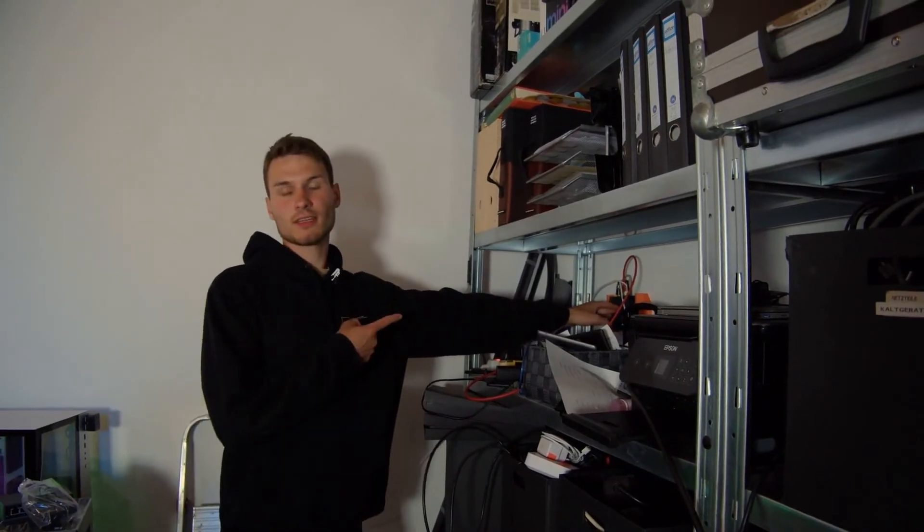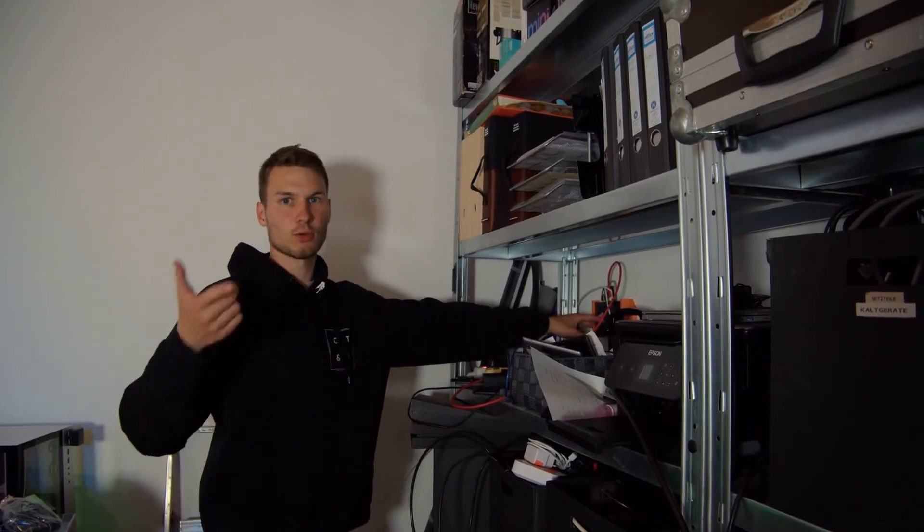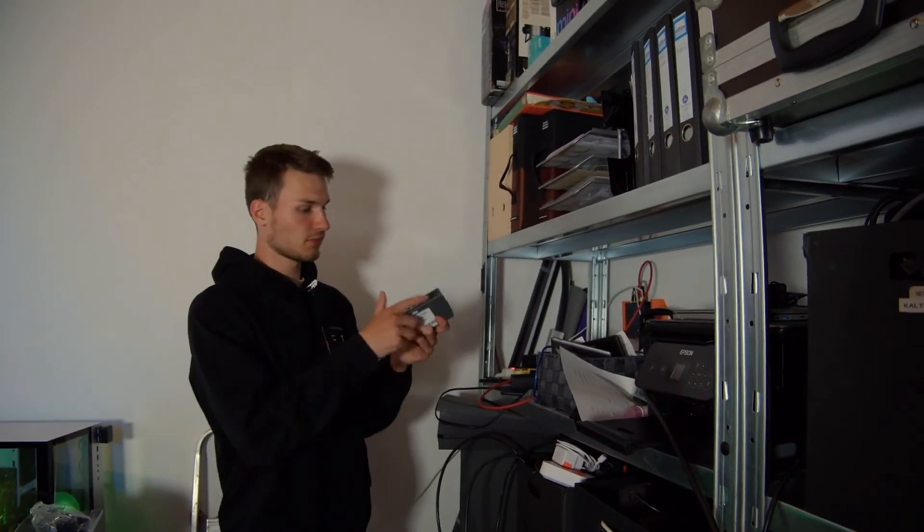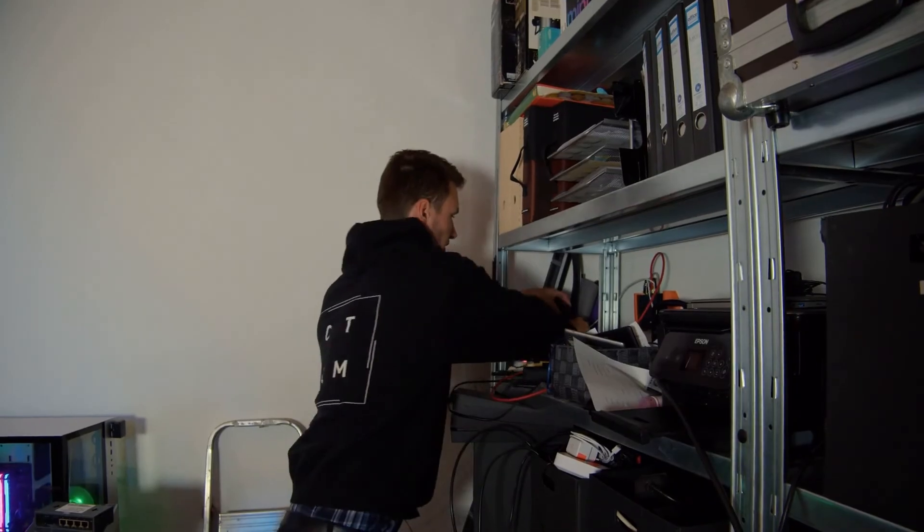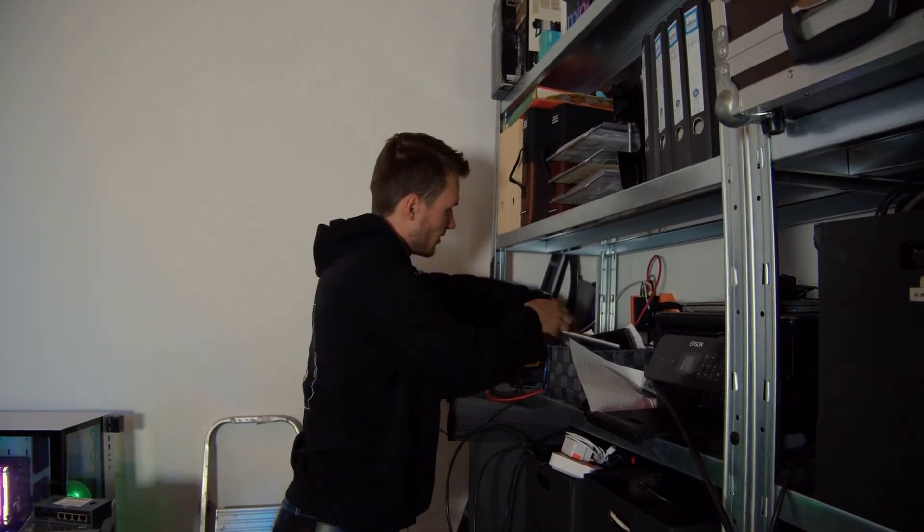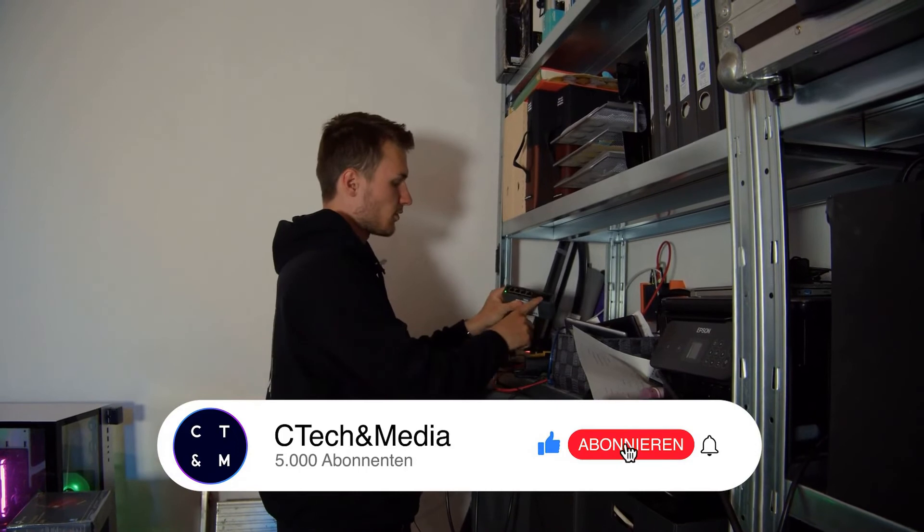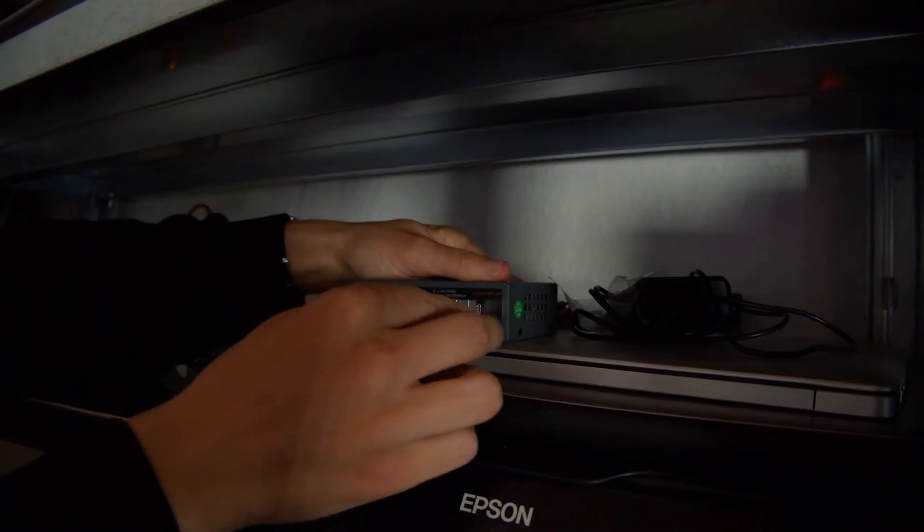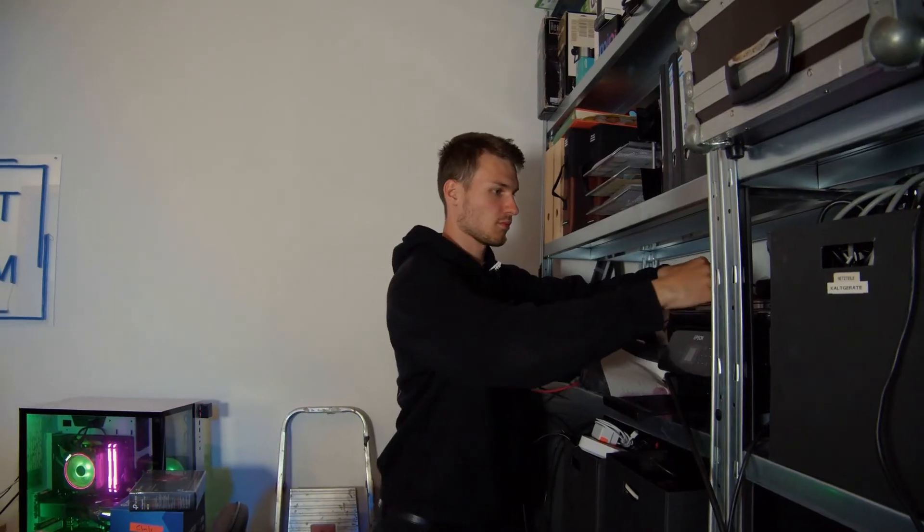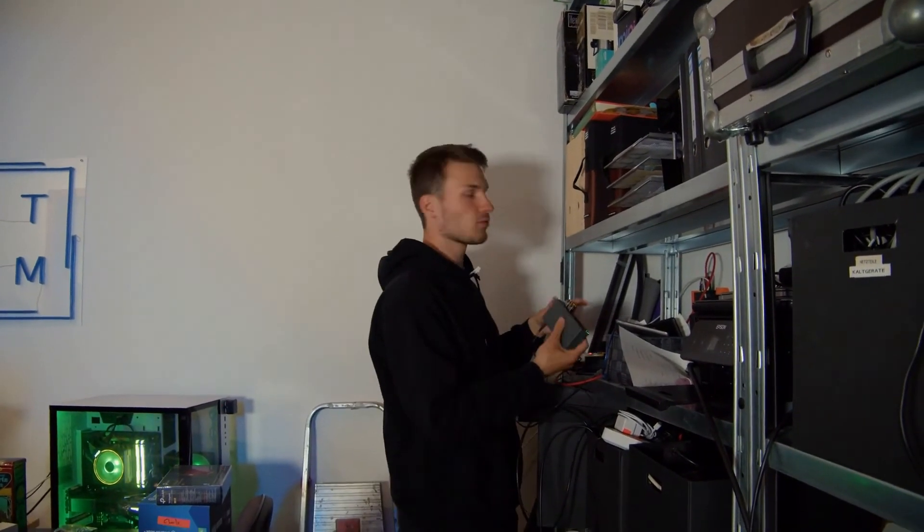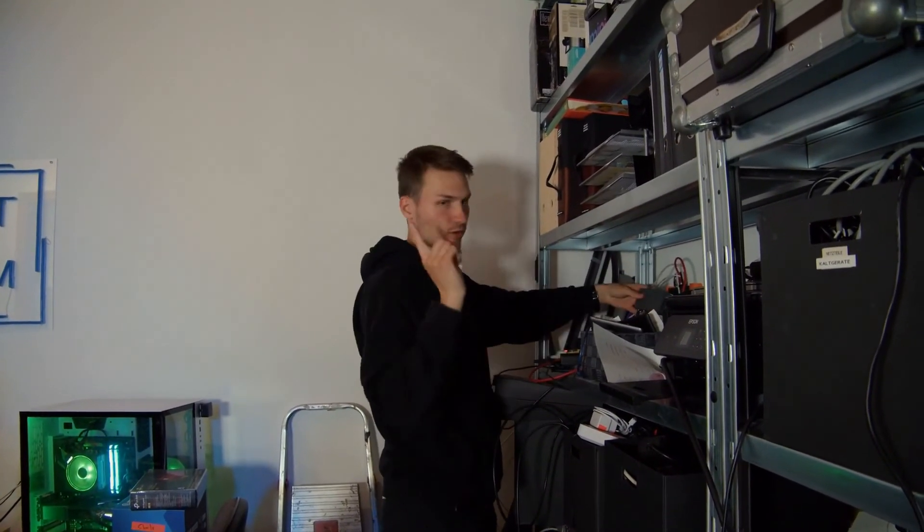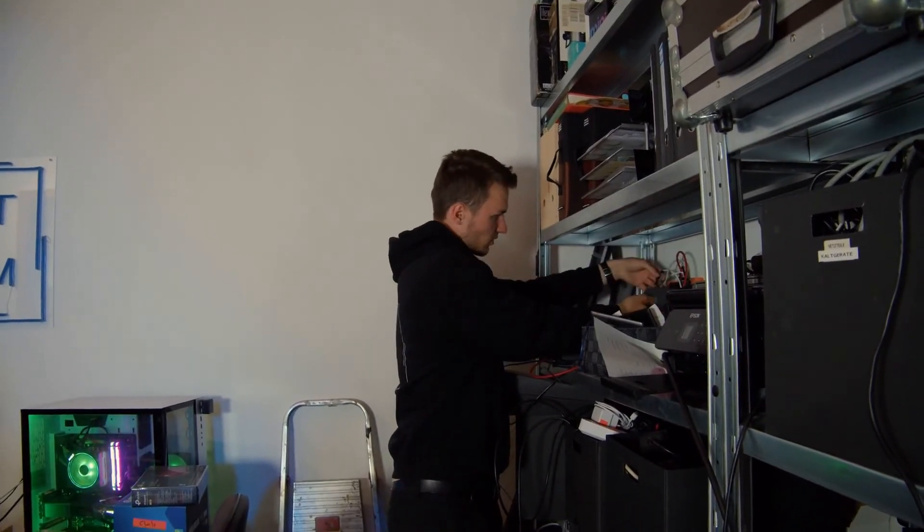So, here we are directly at the second switch. This is where the network comes in, which is output from the UDM. We need to exchange this now, so the switch here from 1 gigabit to this switch here with 10 respectively. Two and a half gigabits. I'll just plug this into the power here, then here. Done. And now we need two SFP modules again to connect the 10 gigabit ports. And after the two SFP modules are connected, we just need to connect them to the network coming from the UDM and then to the network going to my computer.